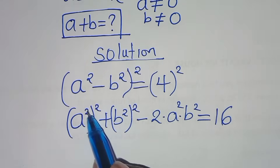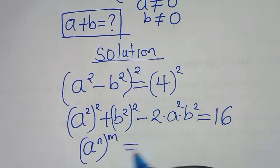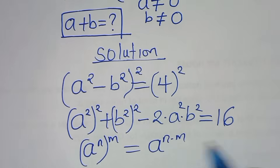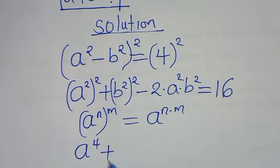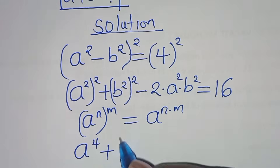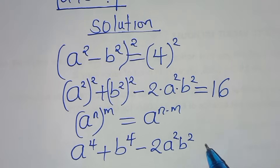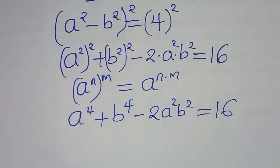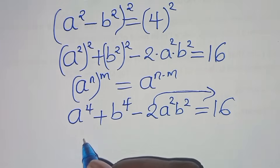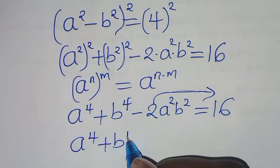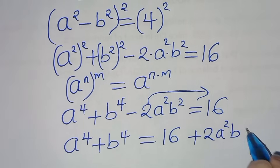Here, a squared raised to the power of 2 is in the form of a to the power of n raised to the power of m, which can be expressed as a to the power of n times m. Applying this exponent property, we have a to the power of 4, plus b to the power of 4, minus 2a squared b squared, equals 16.